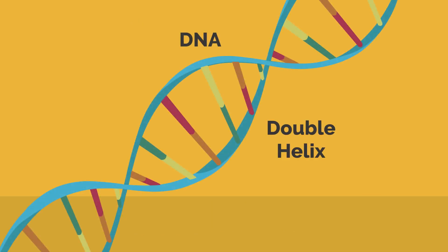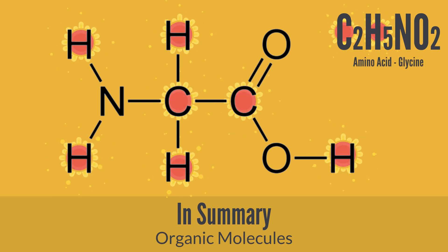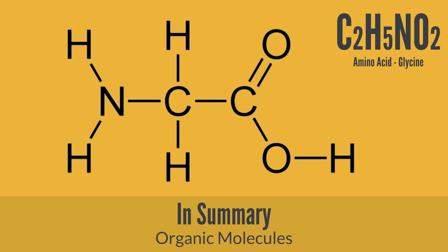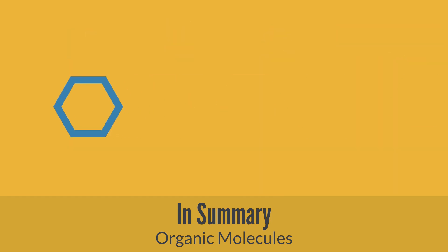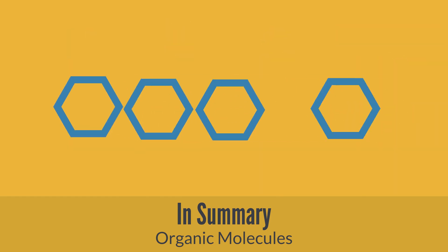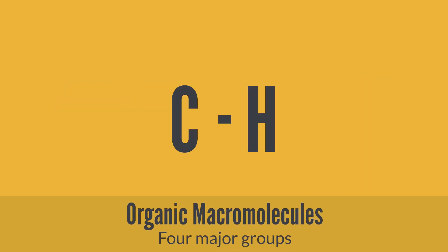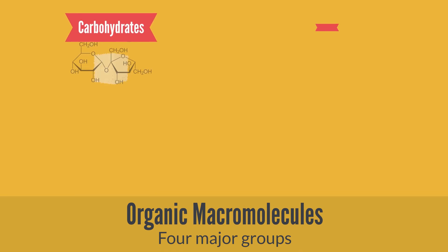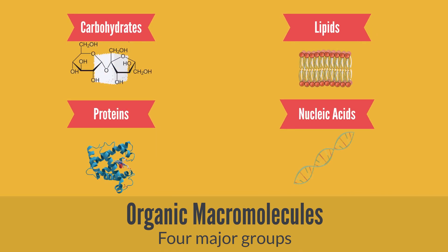Overall, the DNA structure looks similar to a twisted ladder. In summary, organic molecules are usually composed of carbon and hydrogen atoms with other atoms attached, such as oxygen and nitrogen. The structure of all organic macromolecules generally contains long chains of monomers. Most carbon-containing organic compounds found in living cells are the carbohydrates, lipids, proteins, and nucleic acids.